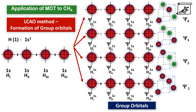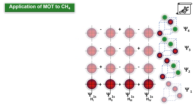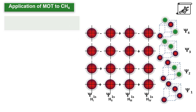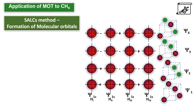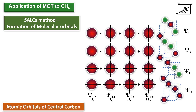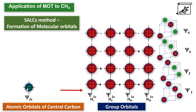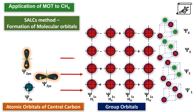These four group orbitals will combine with atomic orbitals of the central atom by the SA-LCS method, that is Symmetry Adapted Linear Combinations, for the formation of molecular orbitals. The central carbon atom's 2s orbital combines with psi1, 2pz combines with psi2, 2px combines with psi3, and 2py combines with psi4.